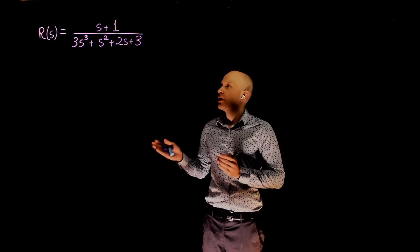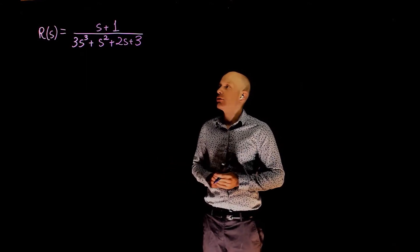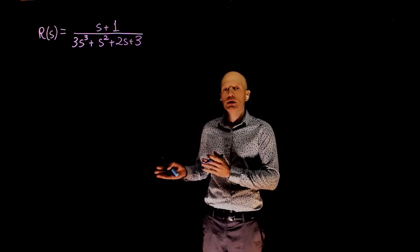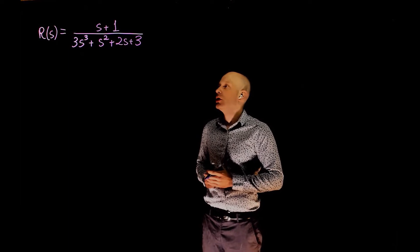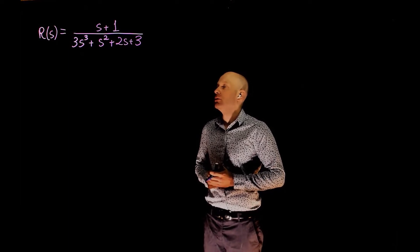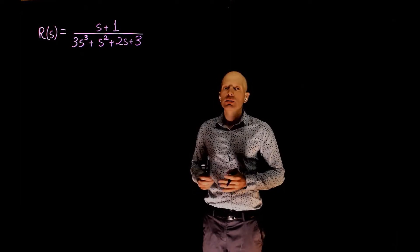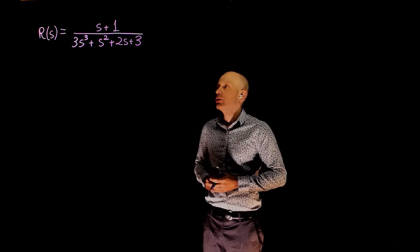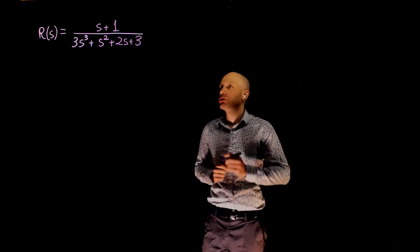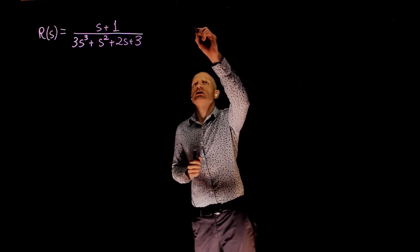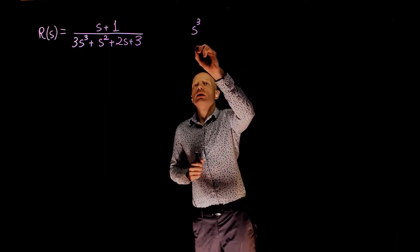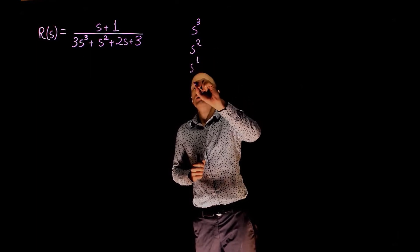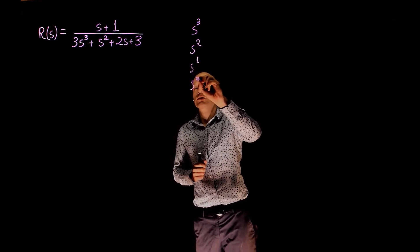In the second example we have a third-order transfer function and we want to evaluate its stability using the Routh-Hurwitz stability criterion. Let's start by creating the Routh array. This is a third-order transfer function, so it starts at s to the power of 3, all the way to s to the power of 0.